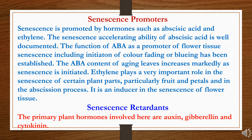Senescence is promoted by hormones such as abscisic acid and ethylene. The senescence-accelerating ability of abscisic acid is well documented. It functions as a promoter of flower tissue senescence, including initiation of color fading or bluing. The abscisic acid content of aging leaves increases markedly as senescence is initiated. Ethylene plays a very important role in the senescence of certain plant parts, particularly fruits and petals, and in the abscission process. It is an inducer in the senescence of flower tissues.